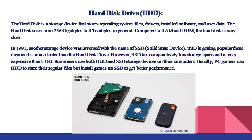The hard disk is a storage device that stores operating system files, drivers, installed software, and user data. Hard disk sizes range from 256GB to 4TB in general. Compared to RAM and ROM, the hard disk is very slow. In 1991, another storage device was invented called SSD, Solid State Drive. SSD is getting popular as it is much faster than the hard disk drive. However, SSD has comparatively low storage space and is very expensive compared to HDD. Some users use both HDD and SSD; PC gamers often use HDD for regular files but install games on SSD for better performance.